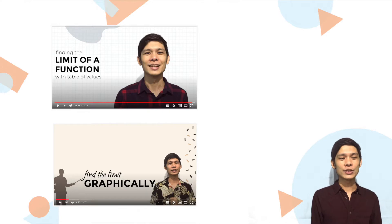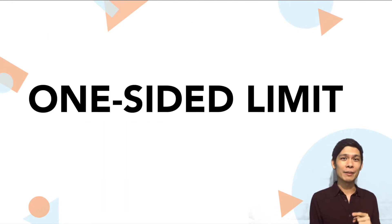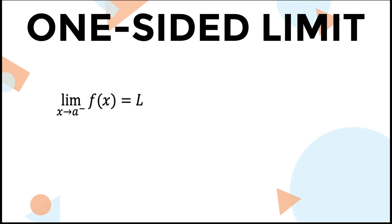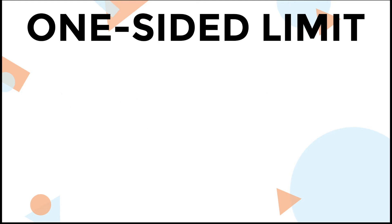In the previous videos, we've been finding the limit by looking at the values on both sides as x is approaching. For one-sided limits, we will look into the limit from each side separately. It is important to note the part that distinguishes one-sided limits when written in symbols — this is the negative and positive signs above the number A. A negative sign above A indicates the left-hand limit, while a positive sign indicates the right-hand limit. One-sided limits are mostly used to find the limit of piecewise defined functions.